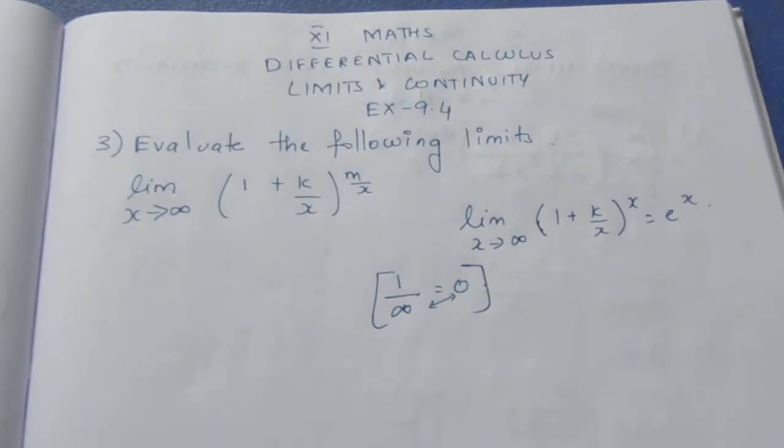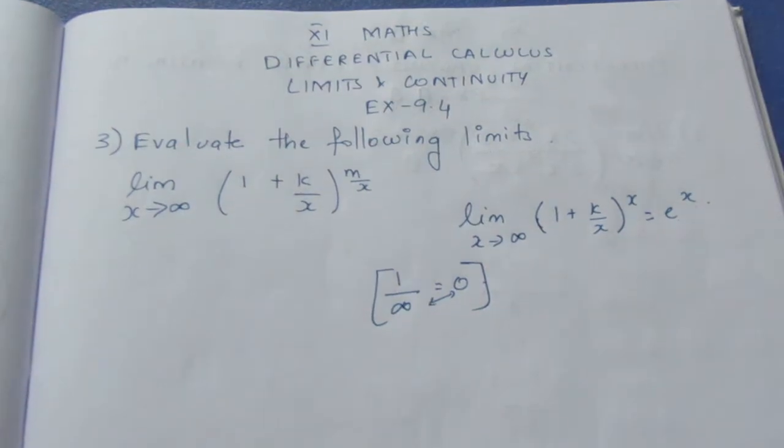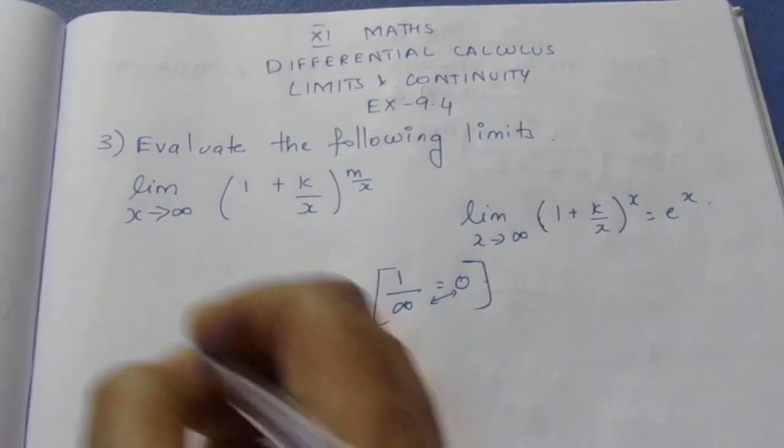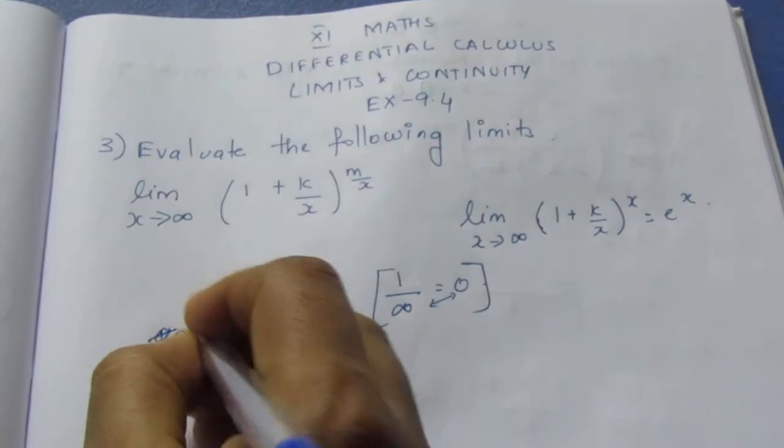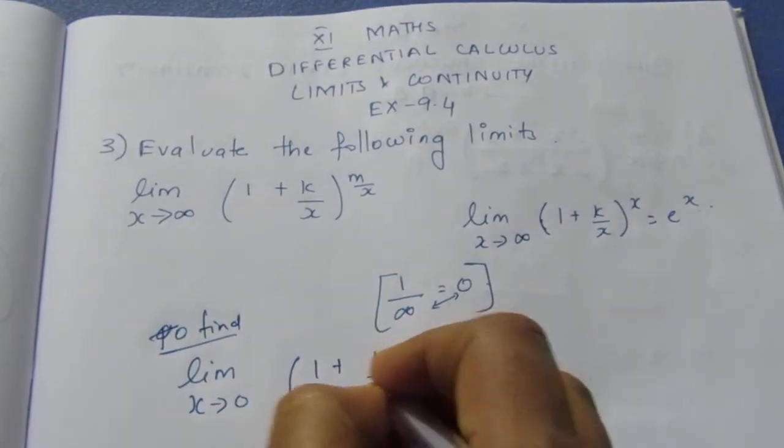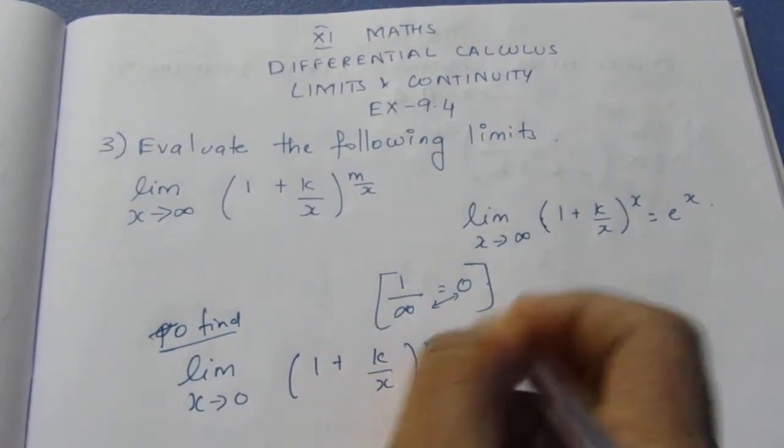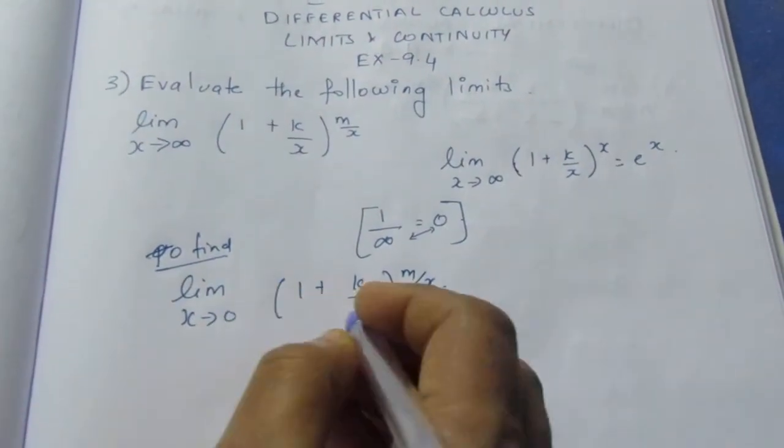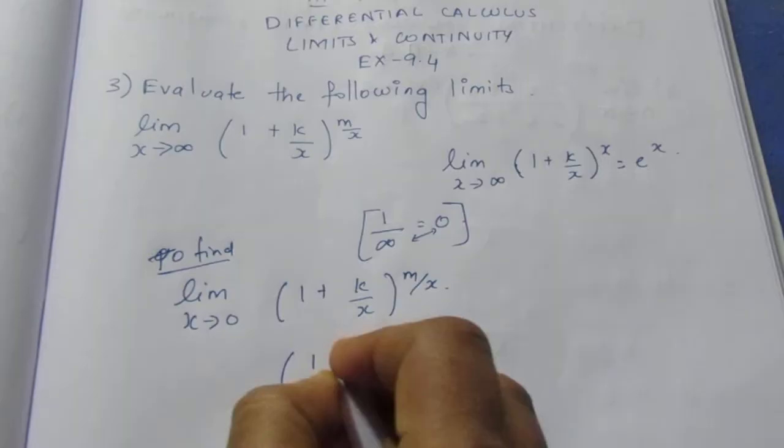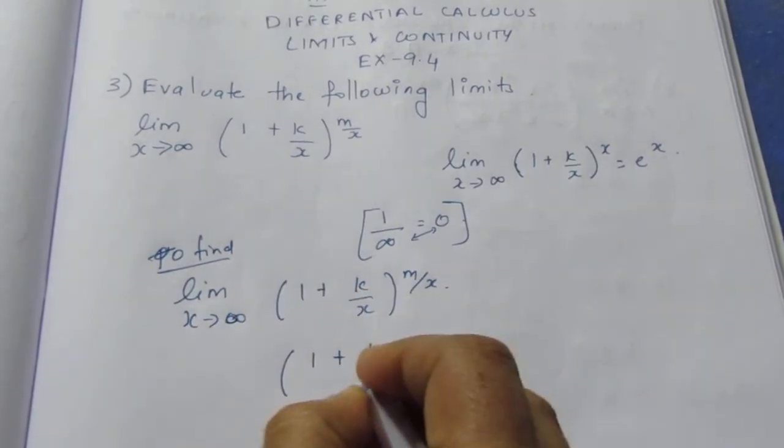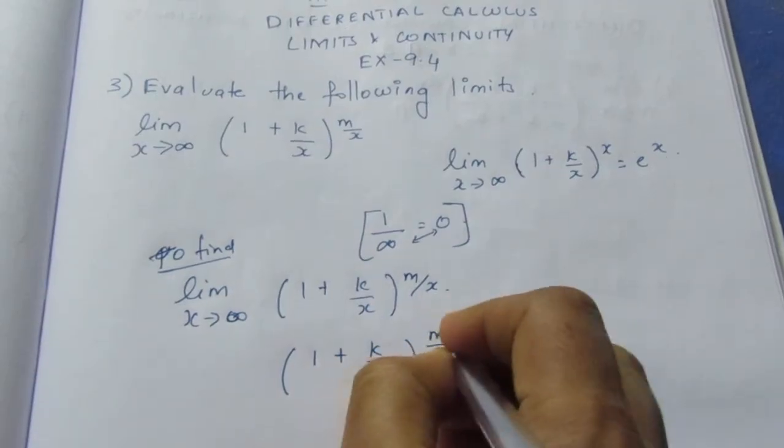That is equal to 0. Now, limit as x tends to infinity, given to find: (1 + k/x) to the power m/x. Now substitute: (1 + k/infinity) to the power (m/infinity).